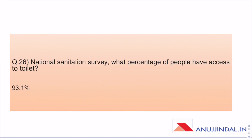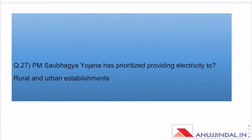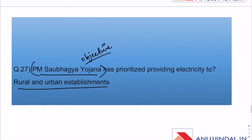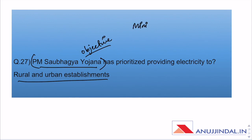Poshan Maah under Poshan Abhiyan was celebrated in September 2018 — not a difficult question, and it was covered. National Sanitation Survey: what percentage of people have access to toilets — already covered in Spotlight. PM Saubhagya Yojana has prioritized providing electricity to rural and urban establishments. If you understand its purpose from the Ministry-Wise scheme coverage, you could have answered this very easily.